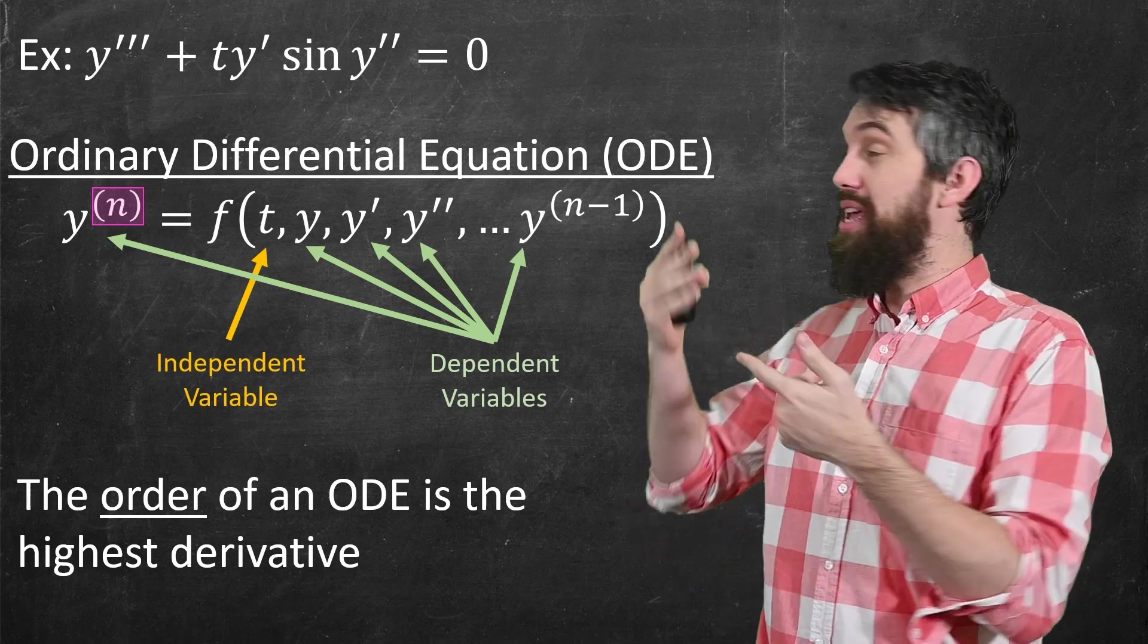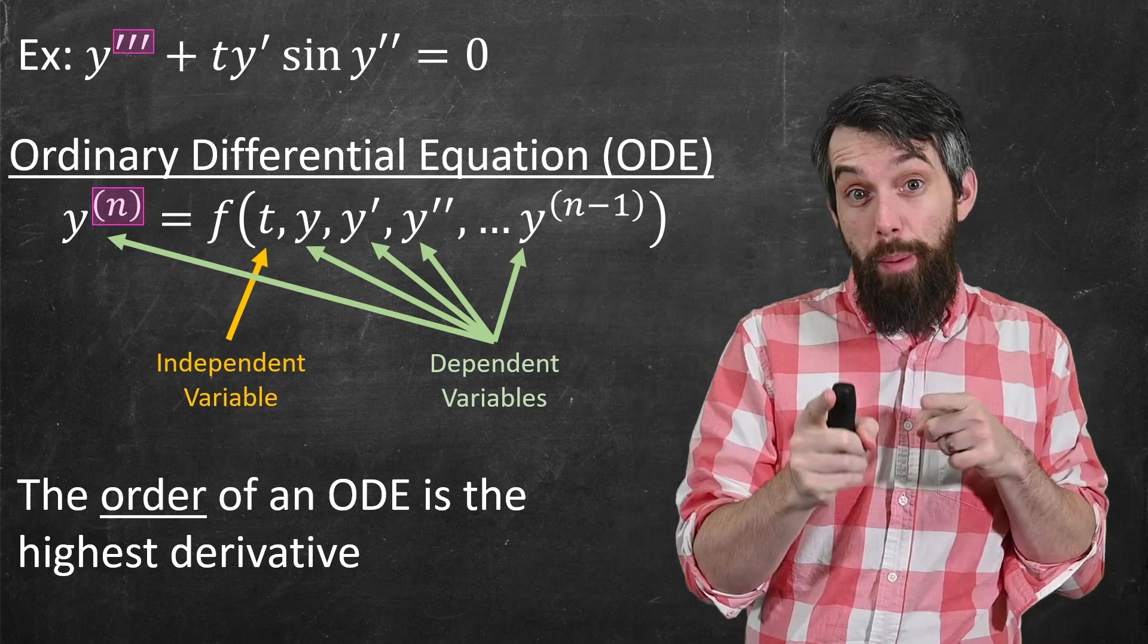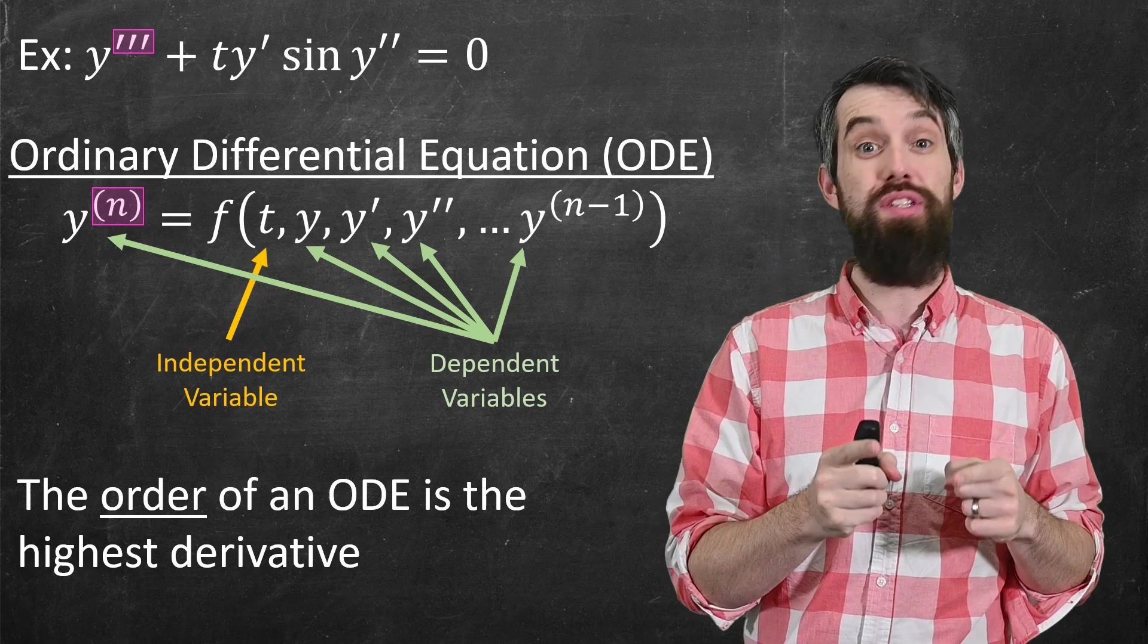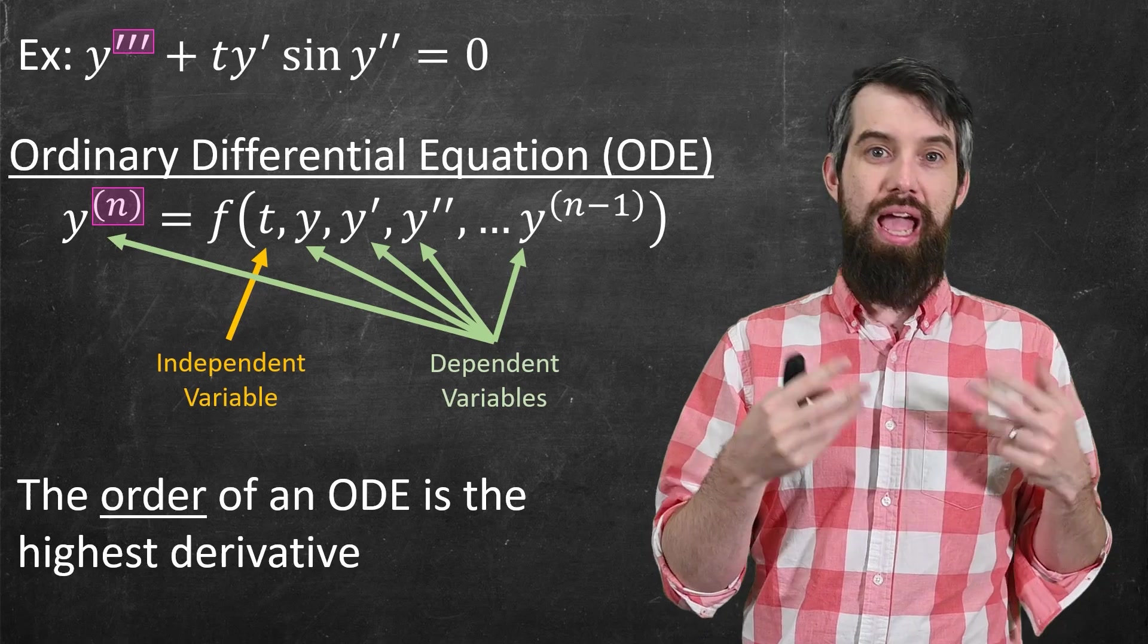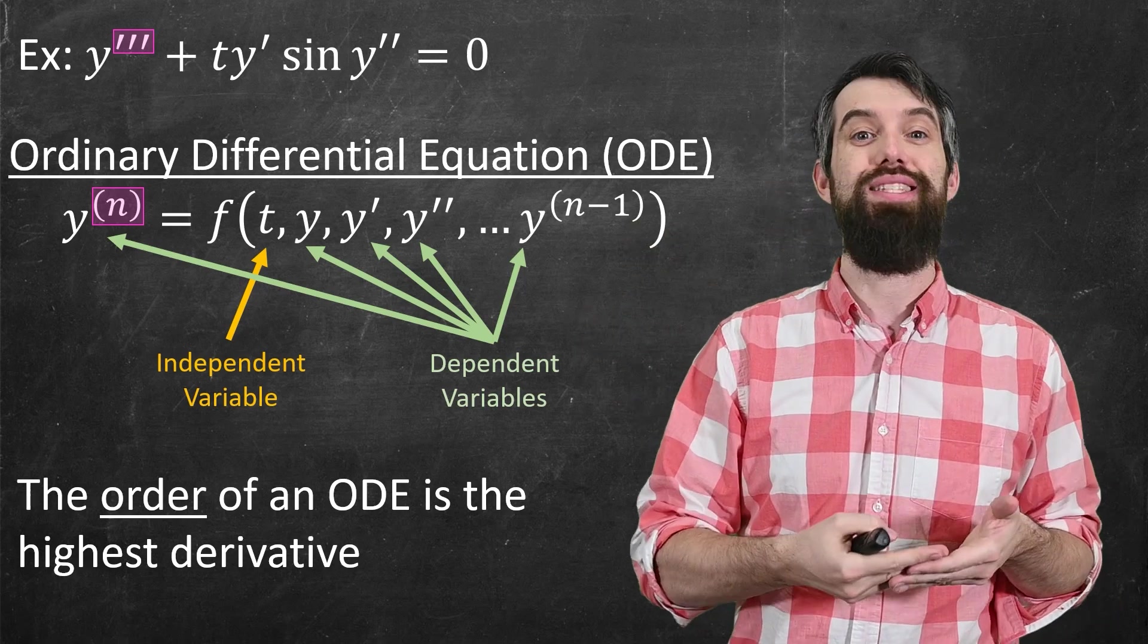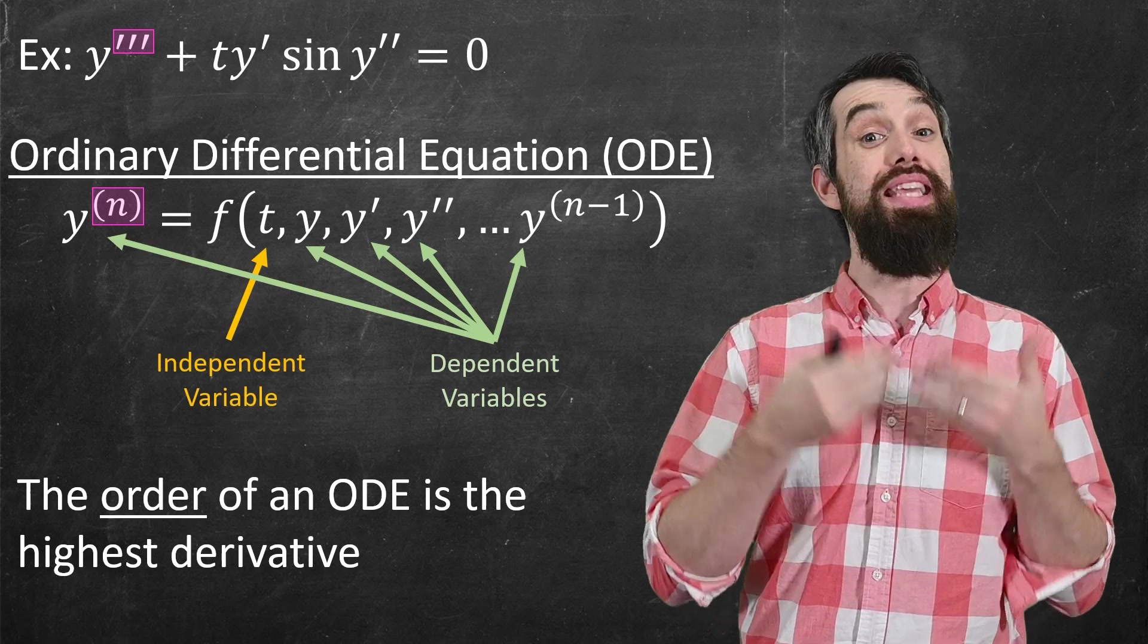And the order of a differential equation is just the highest derivative that appears. So in my example where there was a y triple prime, that y triple prime was the highest order of a derivative, and so we say the order of that differential equation is 3. And in the general case, that is an nth order differential equation.